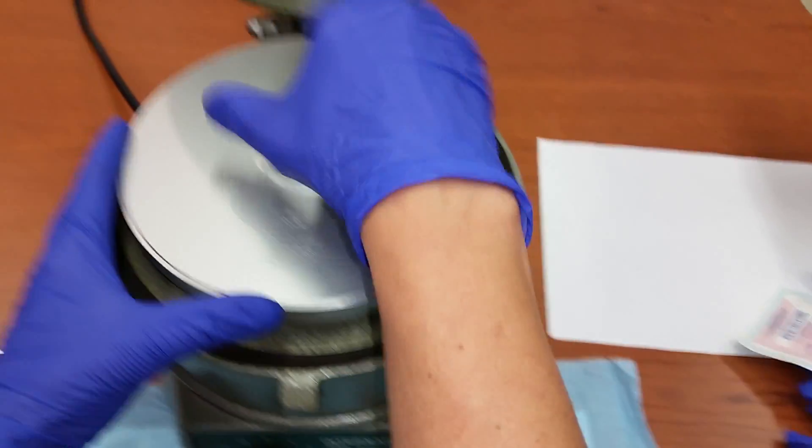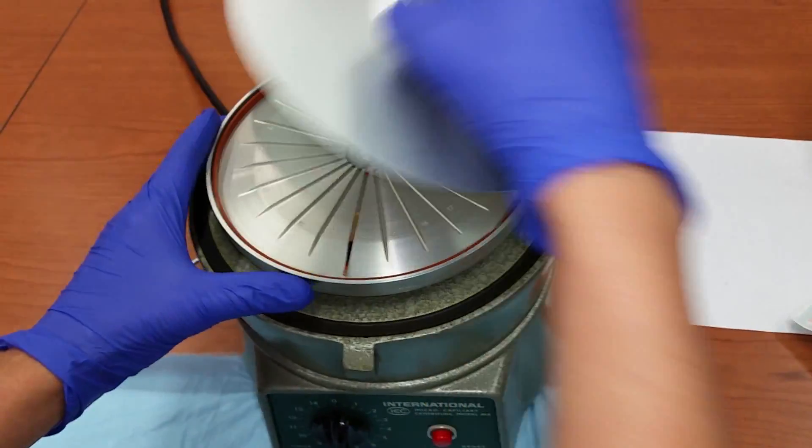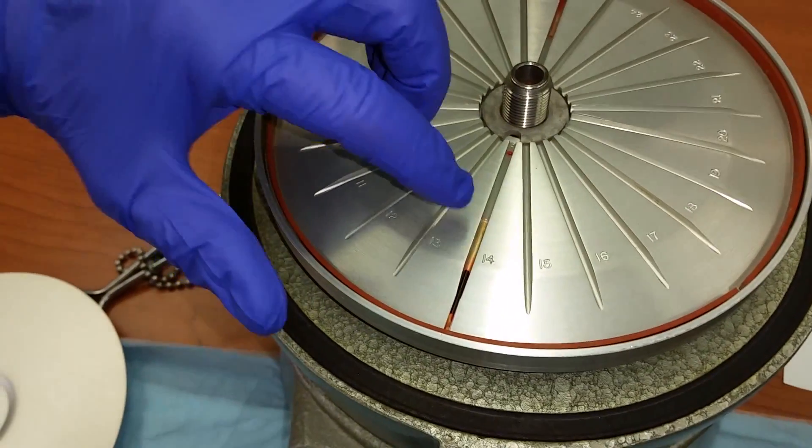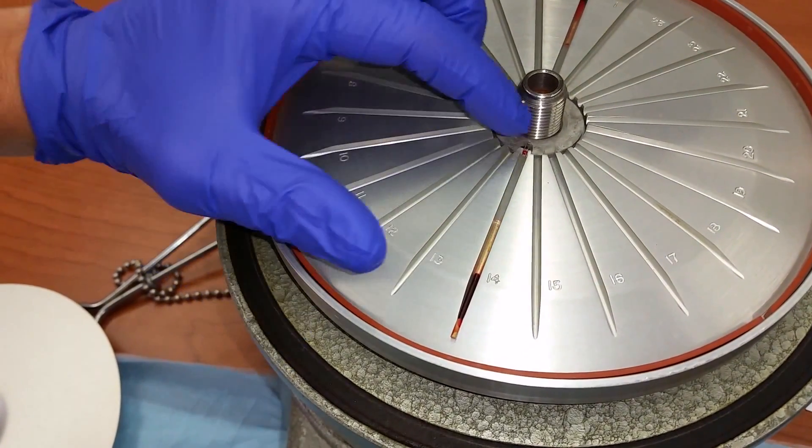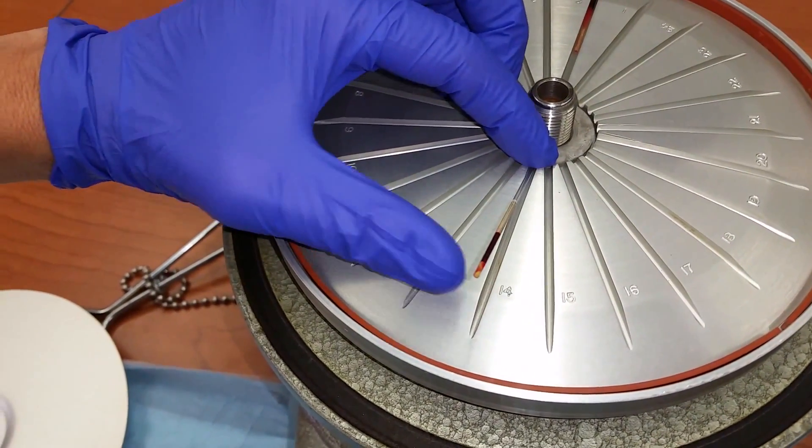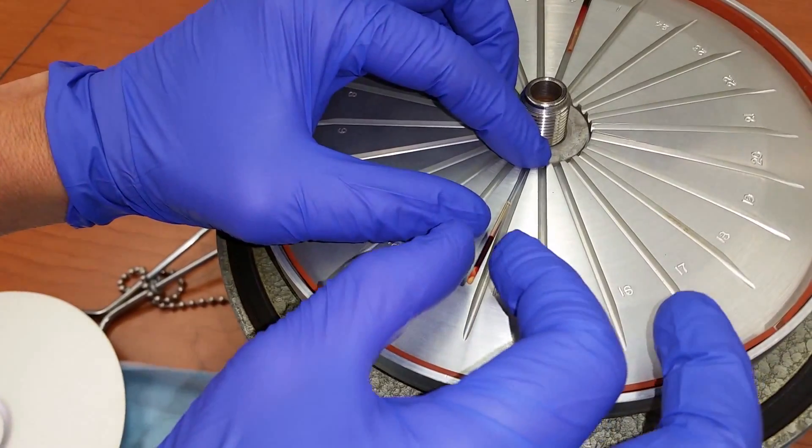Remove the cover. To remove the capillary tube, slide it towards the middle of the centrifuge, put some pressure on the top and the bottom part will pop up.